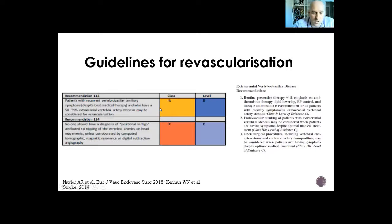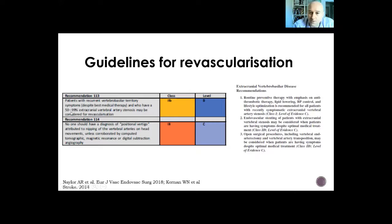Regarding guidelines on revascularization of vertebral artery stenosis: all patients with recently symptomatic extracranial vertebral artery stenosis should be recommended for preventive treatment, including antithrombotic treatment, lipid-lowering treatment, blood pressure control, and lifestyle optimization. Patients with recurrent vertebrobasilar symptoms despite best medical treatment and who have 50–99% extracranial vertebral artery stenosis might be considered for revascularization via endovascular stenting or surgery.